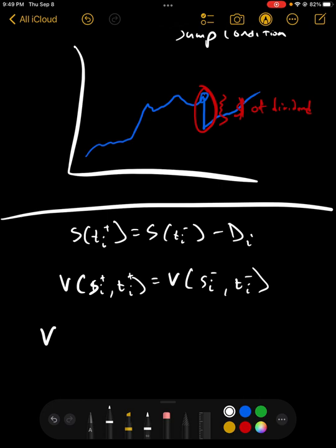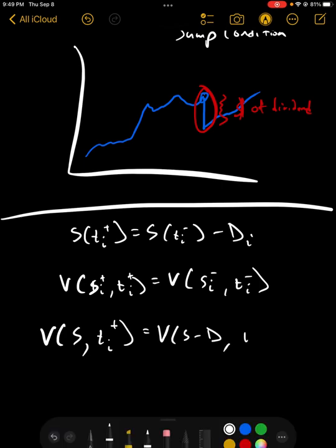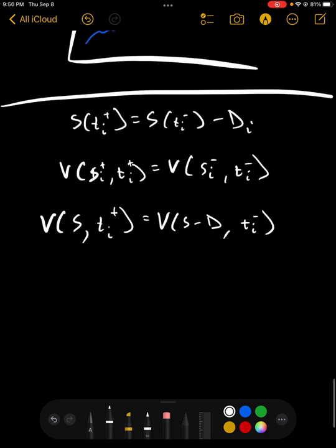So, even though we know that the price after has to be equal to the price before minus the dividend, the value of the option after has to be equal to the value of the option before. Isn't that interesting? There is no jump in the option price. So, if we put these two together, we know that V of S as t approaches from the right has to be equal to V of S minus D. Does that make sense? Because we know that these things hold. You're right, I got that backward. There we go. Always pay attention to your signs, people.